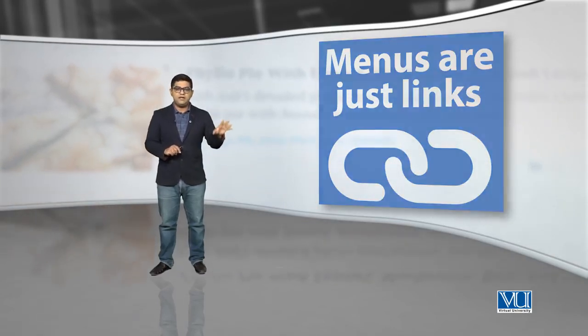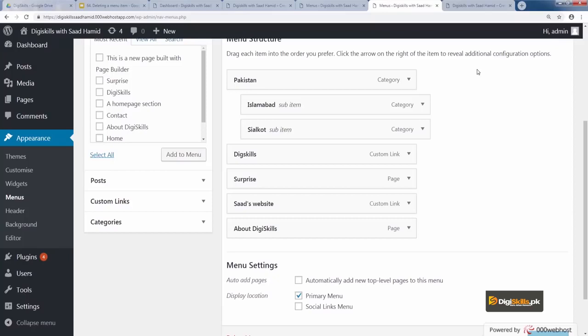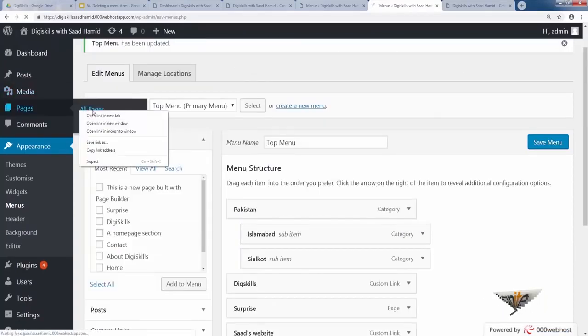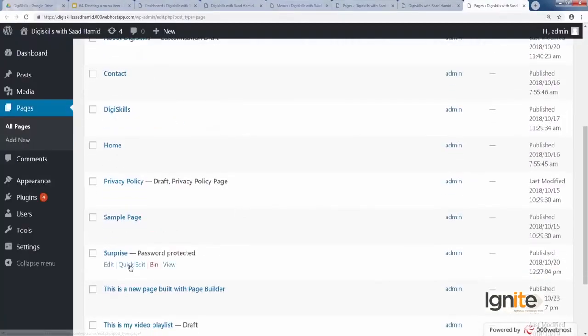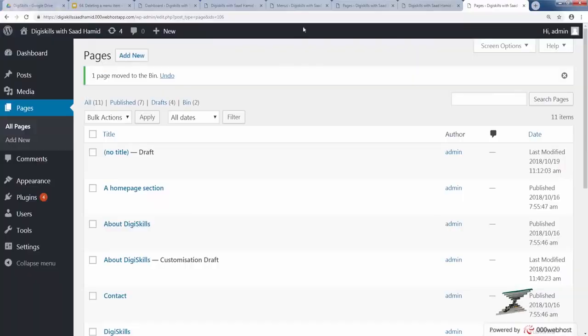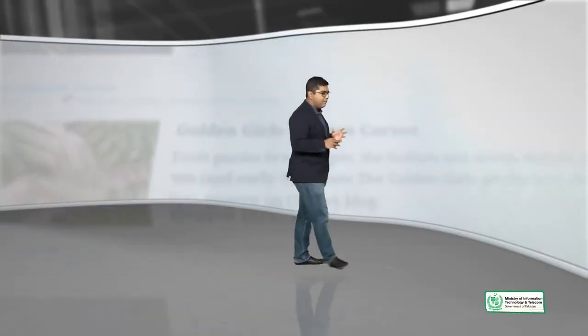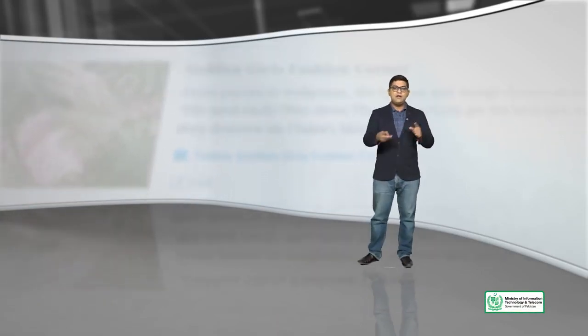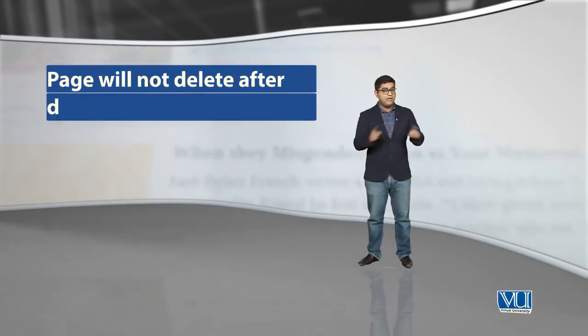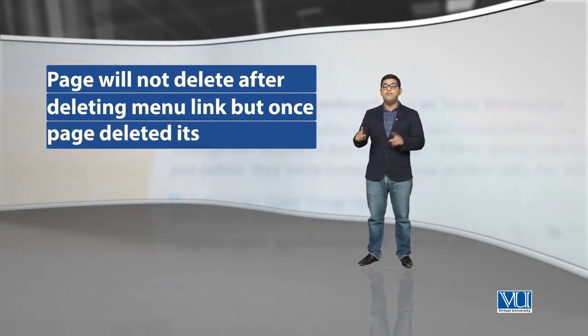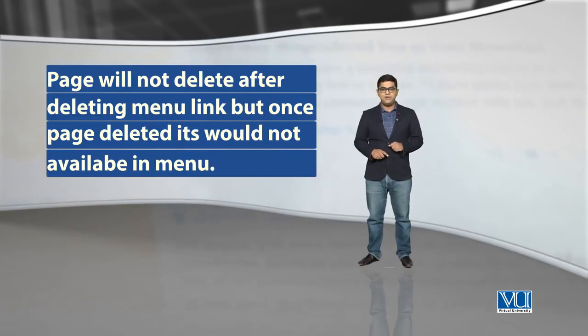Similarly, if you have a custom category menu and you remove it from the menu, the actual category will not be deleted. To delete the actual category, you need to go to the category section. However, if you delete a page, it will automatically be removed from the menu. Keep in mind how deleting or removing one thing affects the other.